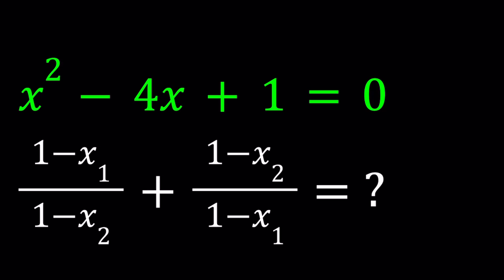We have x squared minus 4x plus 1 equals 0, and we're going to evaluate where x sub 1 and x sub 2 are the roots of this equation, even though they were not stated. We're going to find this sum, which is 1 minus x sub 1 over 1 minus x sub 2, and its reciprocal added together.